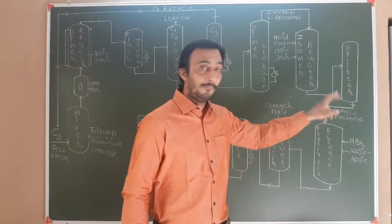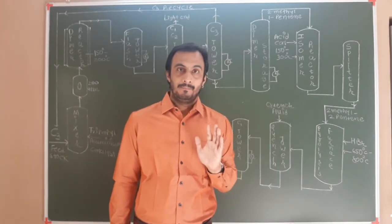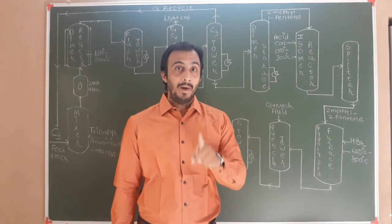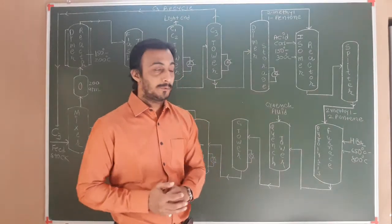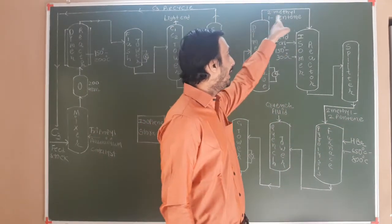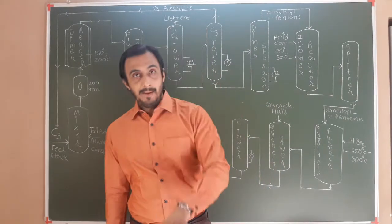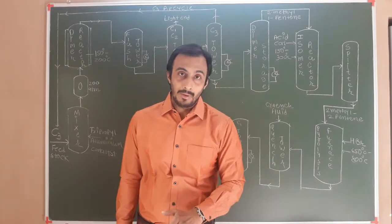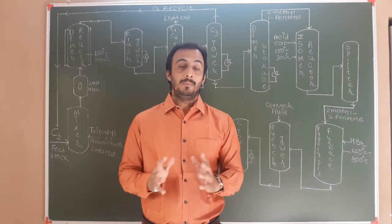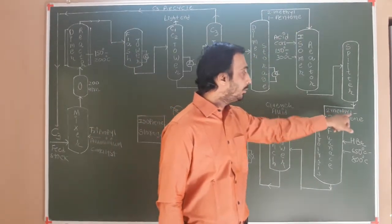The molecular formula of 2-methyl-2-pentene and 2-methyl-1-pentene is the same, and the molecular weight also remains the same. But structural rearrangement takes place. So 2-methyl-2-pentene is the isomer of 2-methyl-1-pentene — both have the same molecular formula and molecular weight, but differ in the arrangement of their chemical structure.